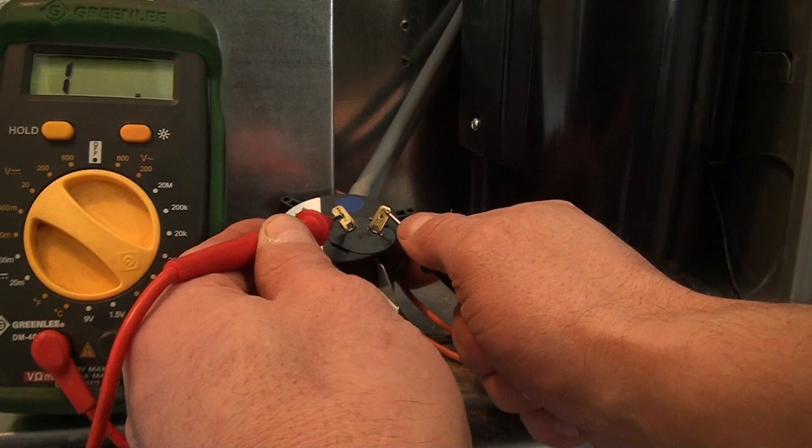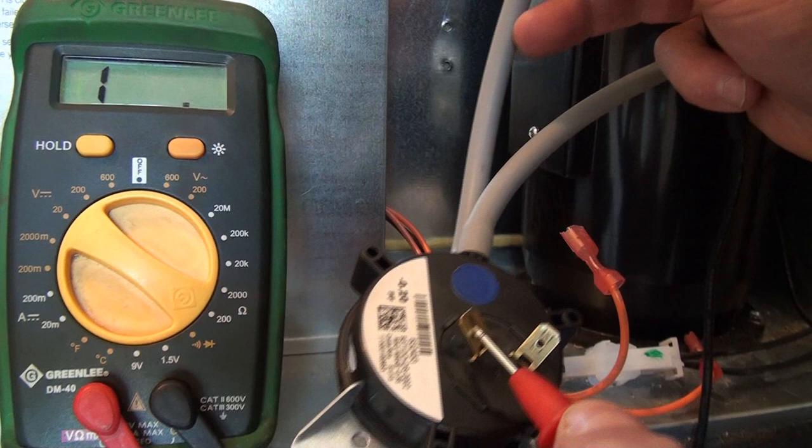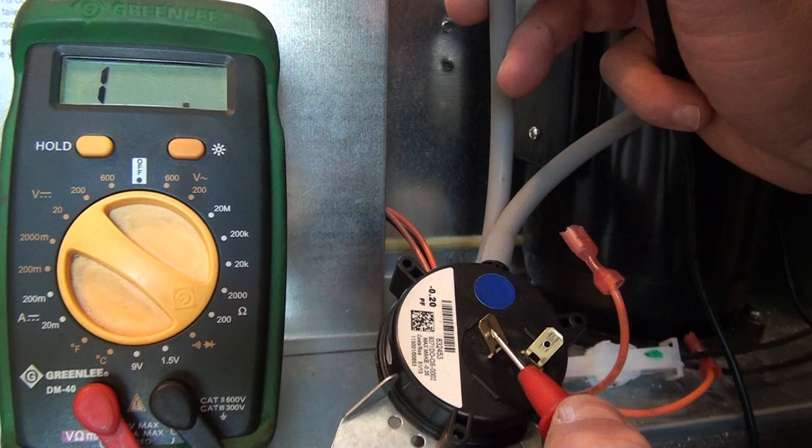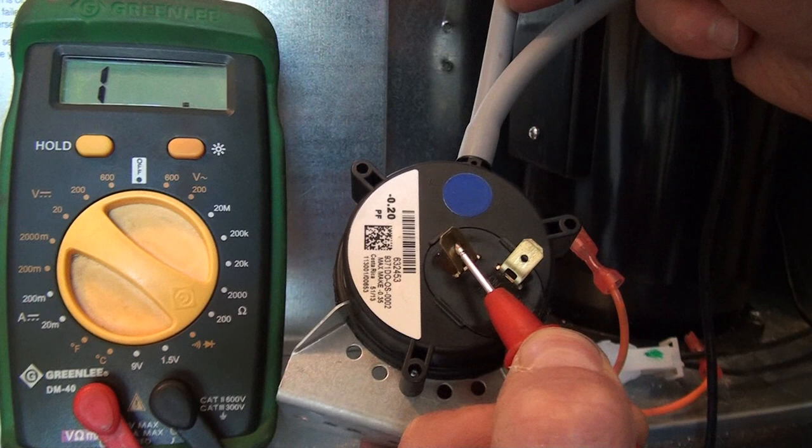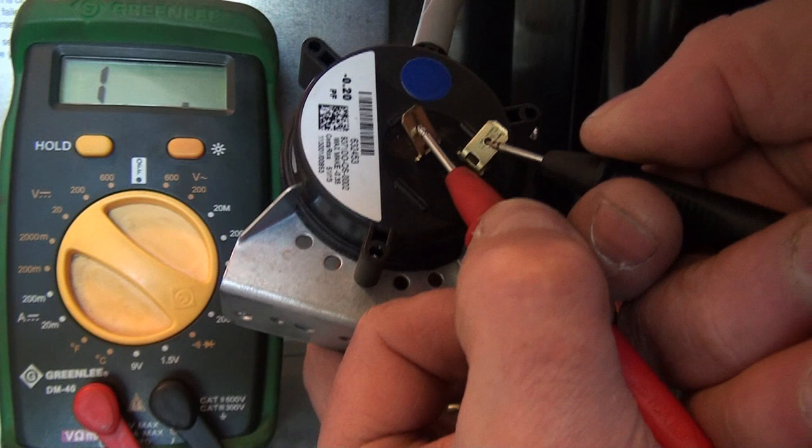Alright, so the next thing we did, the next troubleshooting step was I disconnected the vacuum lines and this is the one for the lower vacuum line. You want to suck gently on that, you want to generate a vacuum or a negative pressure. You don't need a whole lot, I'm not going to get it on camera, you can use your imagination and then we're going to test for the resistance at the same time. Okay, so that activated the switch.